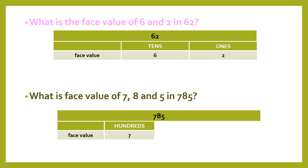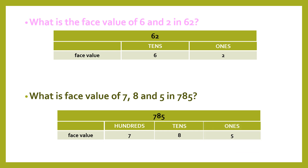Let's look at another example: what is the face value of 7, 8 and 5 in 785? Let's divide each digit. 7 is present at the hundreds place, 8 is present at the tens place, and 5 is present at the ones place. The face value of 7 in 785 remains 7, face value of 8 remains 8, and face value of 5 remains 5. That is, the face value is the numerical value of the digit itself.